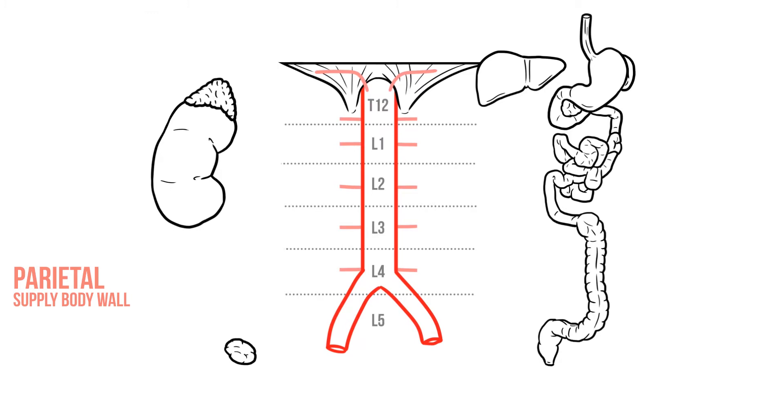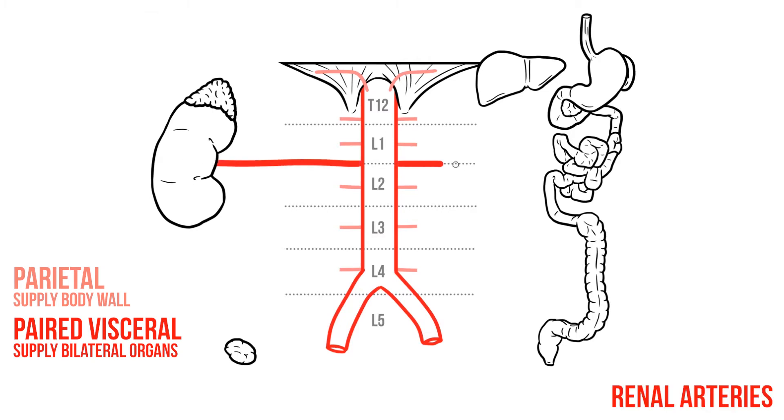The next group are the paired visceral arteries. These supply organs that lie on both sides of the body, although I've only drawn them on the left to help make our illustration a bit clearer. So between L1 and L2 are the renal arteries that supply the kidneys. Remember the aorta lies just to the left of the midline, so the right renal artery will be slightly longer than the left.